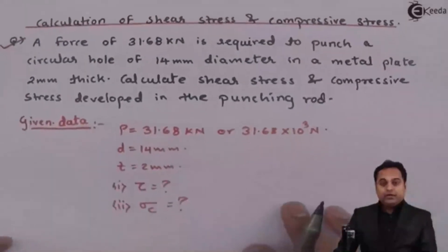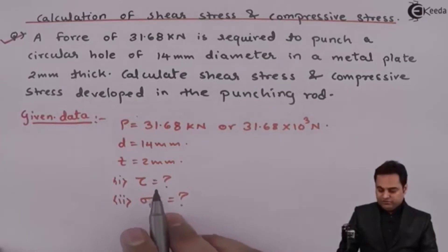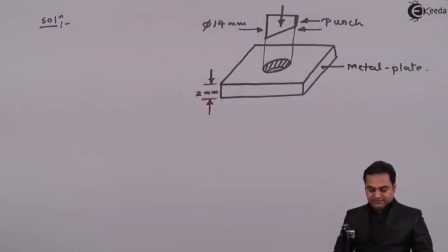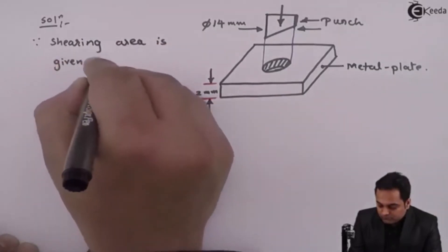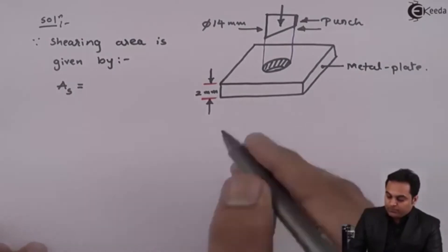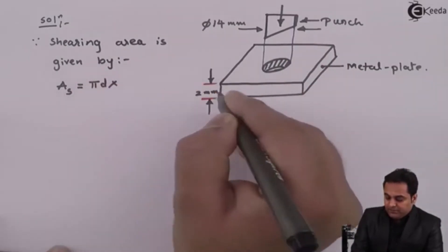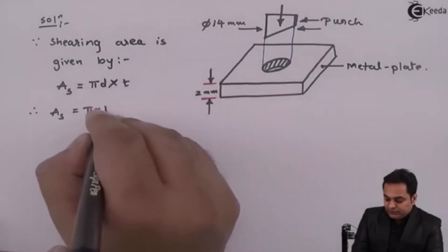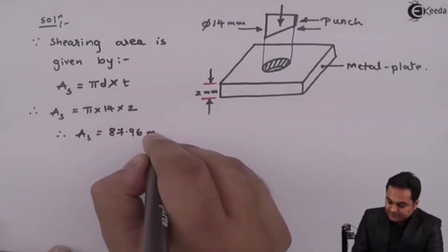We want to calculate the shear stress and compressive stress developed in the punching rod. For that purpose, first I'll calculate the shearing area and the resisting area in compression. The shearing area A_s is the circumferential area, given by pi × D × T. So shearing area = π × 14 × 2, which comes out to be 87.96 mm².